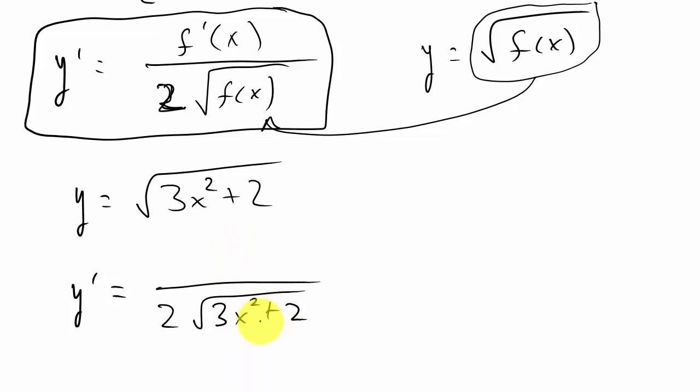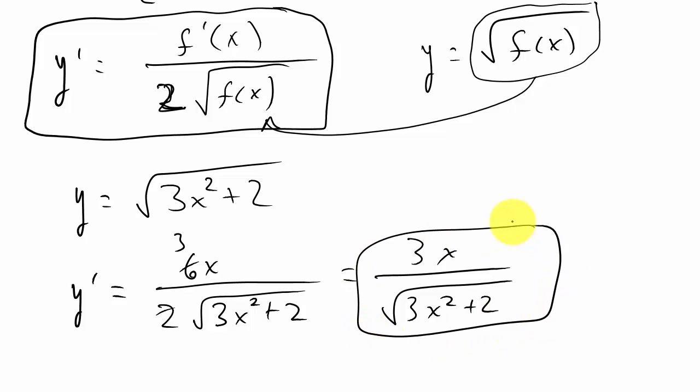See, 2 times and then whatever your problem is. And then in the numerator is the derivative of what's underneath the square root. So the derivative of this would be 6x, and then the derivative of 2 is 0. And so you can see that it cancels and we're left with 3x over the square root of 3x squared plus 2.